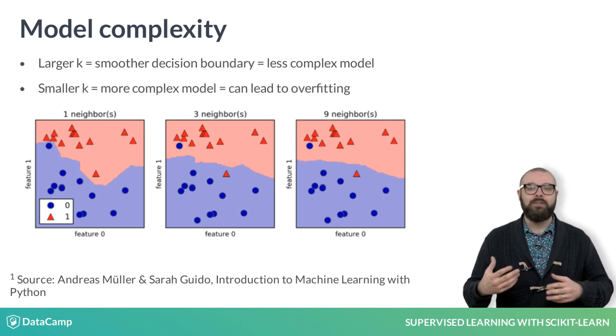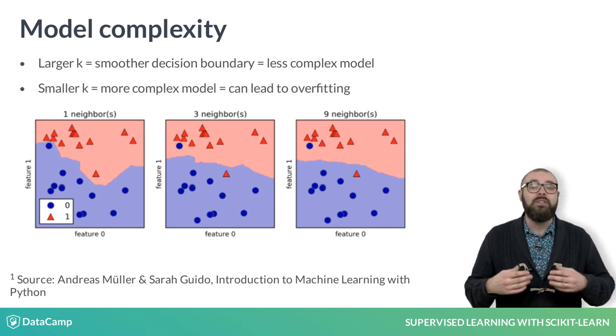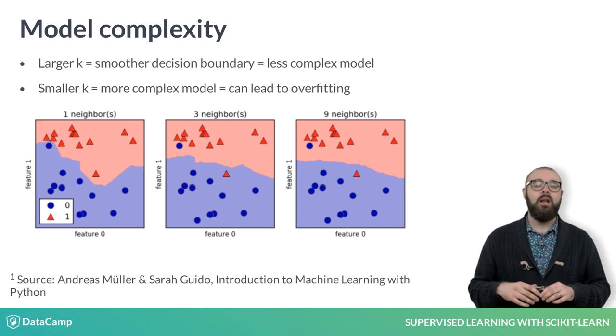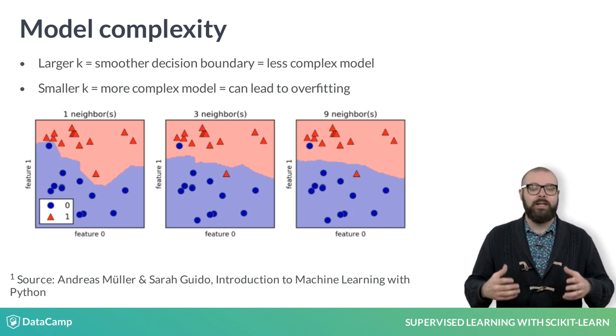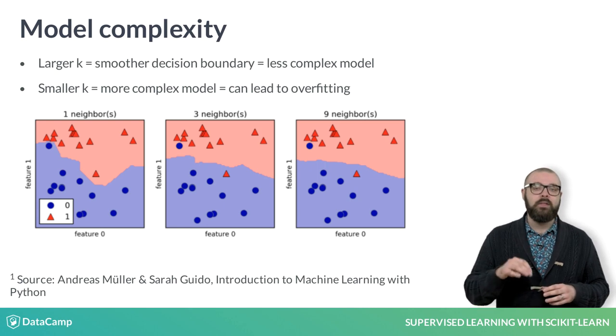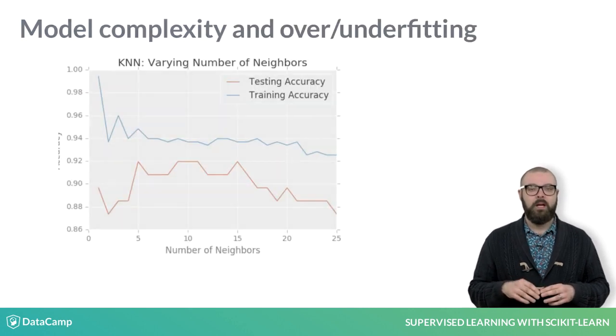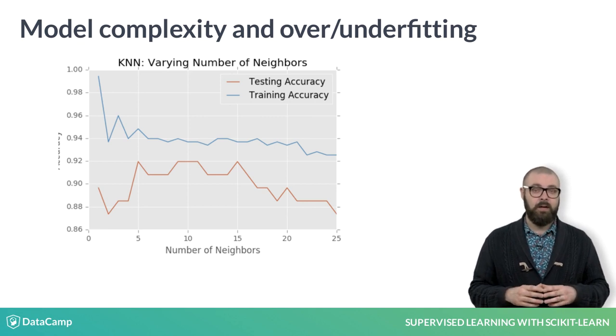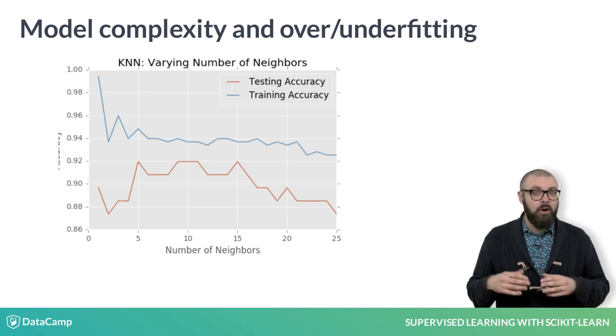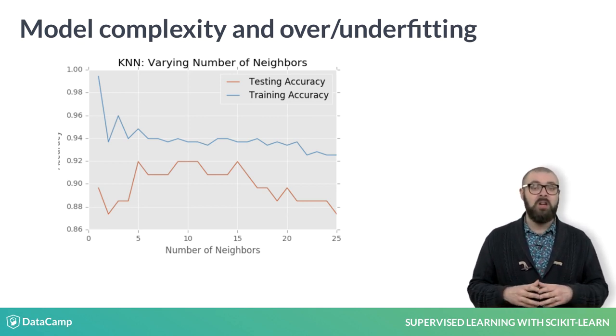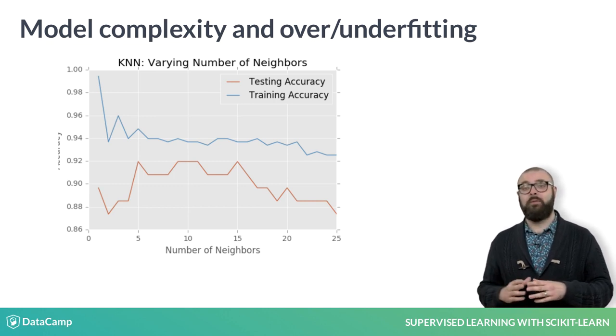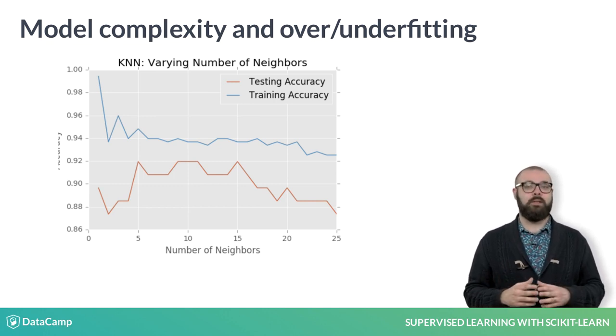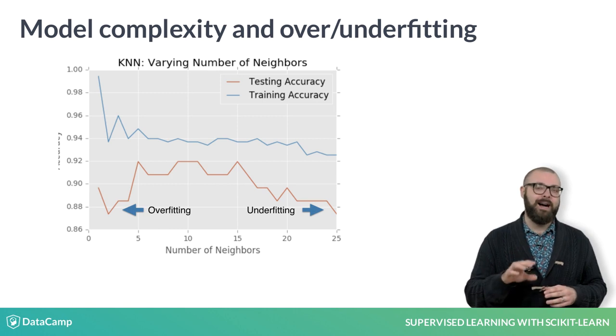Generally, complex models run the risk of being sensitive to noise in the specific data that you have, rather than reflecting general trends in the data. This is known as overfitting. If you increase K even more and make the model even simpler, then the model will perform less well on both test and training sets, as indicated in this schematic figure known as a model complexity curve. This is called underfitting.